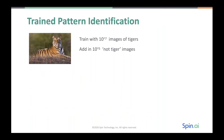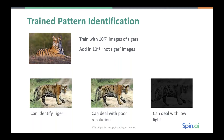Let's take a quick look at trained pattern identification. Suppose we wanted to train machine learning to identify tigers. We throw 10 million images of tigers at it — as much variance as we can get — and then we add a bunch of non-tigers. You train your machine learning with both tigers and non-tigers and you tell it which is which. Then it develops its own spectral analysis and image filtering to learn what a tiger looks like. If done properly, you can identify a tiger even with poor resolution, low light, and a lot of variance.